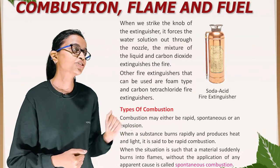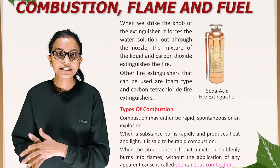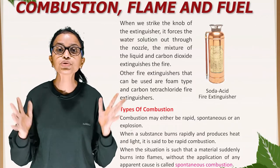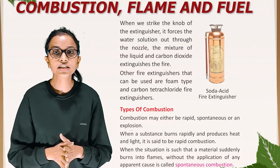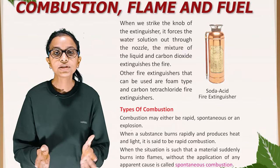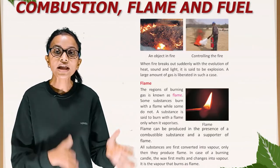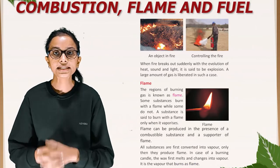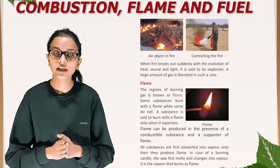Types of Combustion. Combustion may either be rapid, spontaneous, or an explosion. When a substance burns rapidly and produces heat and light, it is said to be rapid combustion. When a material suddenly burns into flames without the application of any apparent cause, it is called spontaneous combustion. When fire breaks out suddenly with the evolution of heat, sound and light, it is said to be an explosion. A large amount of gas is liberated in such a case.